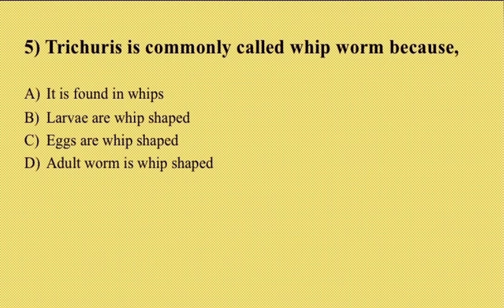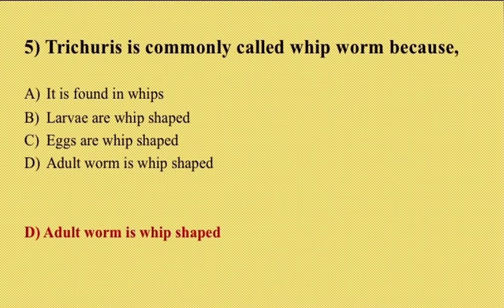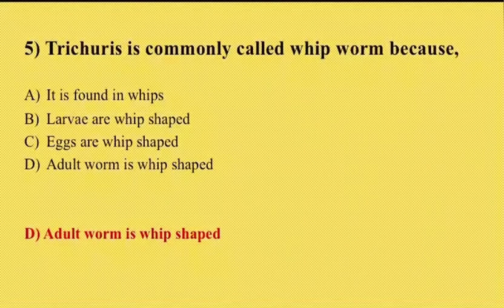Fifth question: Trichuris is commonly called whipworm because option A it is formed in whips, option B larva and whip are whip-shaped, option C eggs are whip-shaped, option D adult worm is whip-shaped. The answer is option D. Regarding Trichuris, the important characters are: barrel-shaped egg, bile-stained egg, thick shell, and a pair of polar plugs at each end.